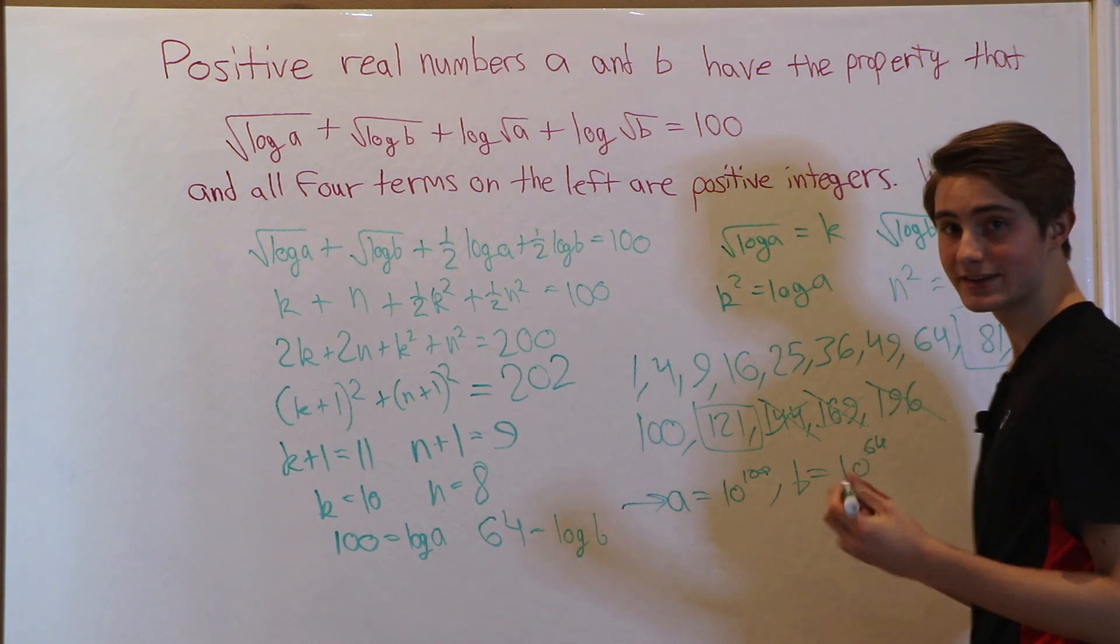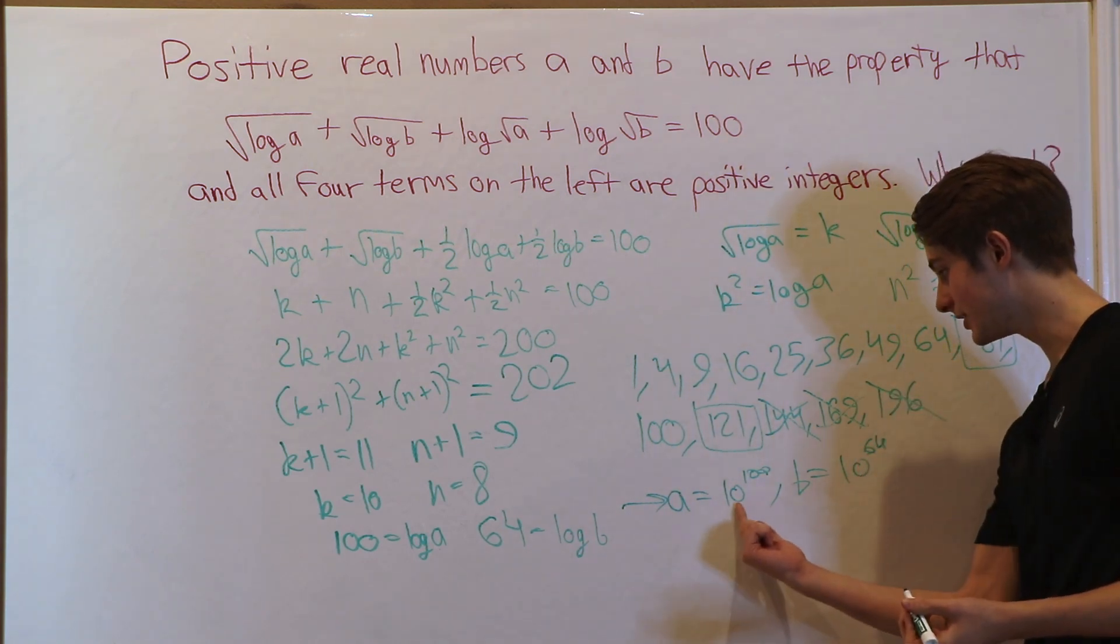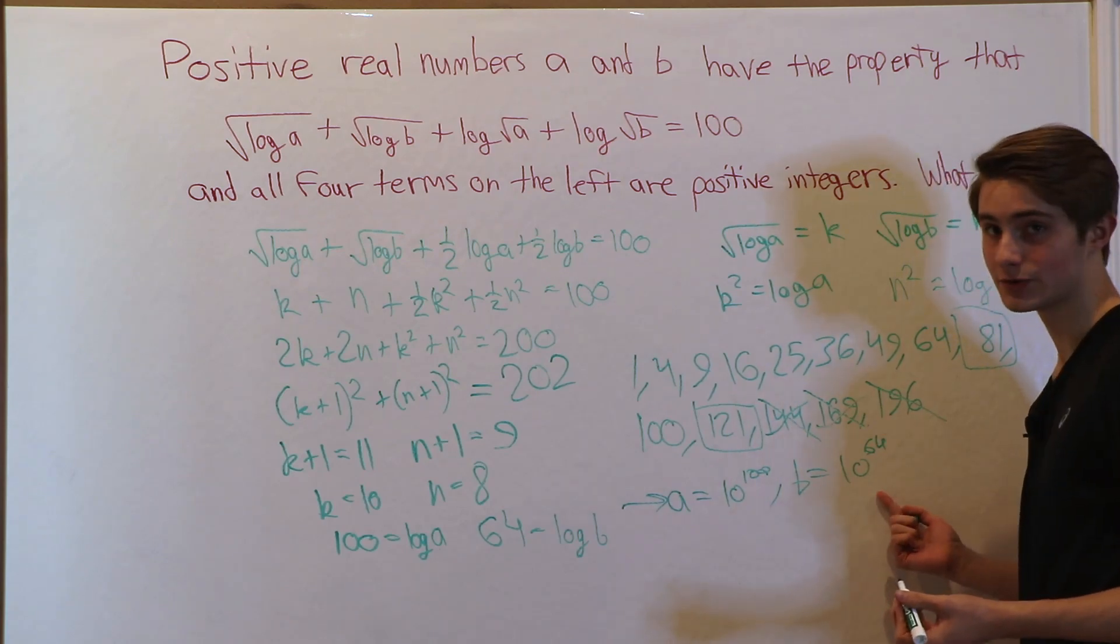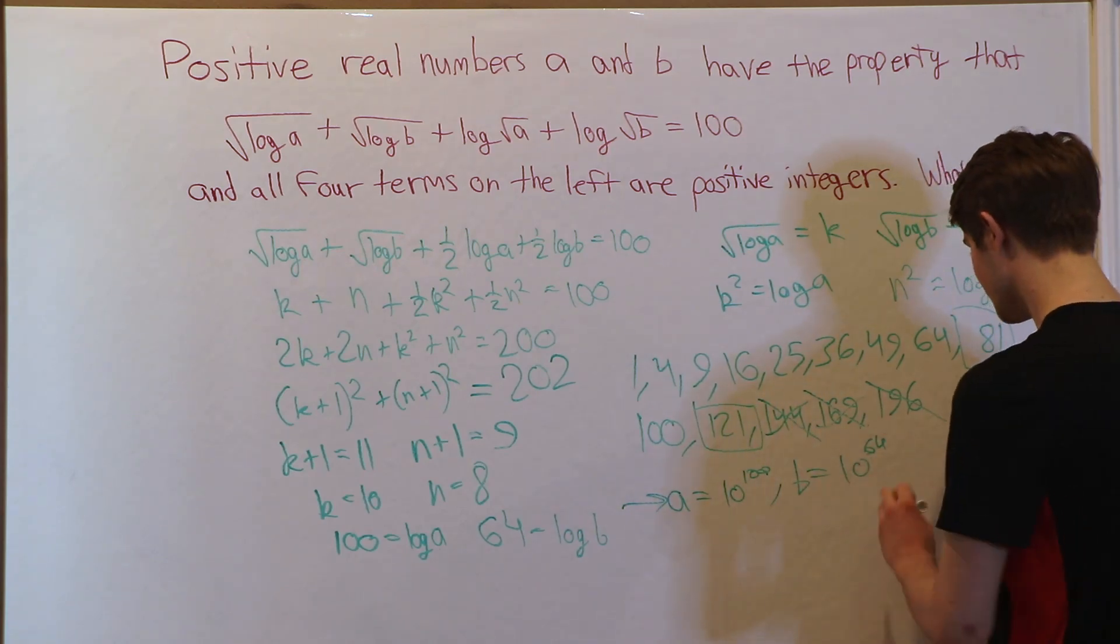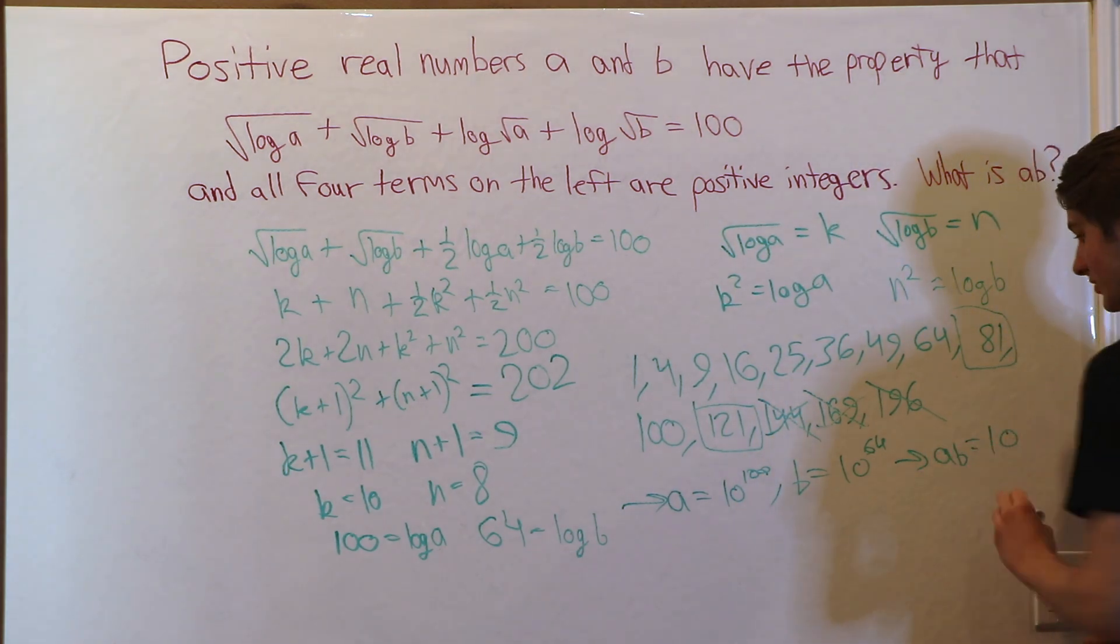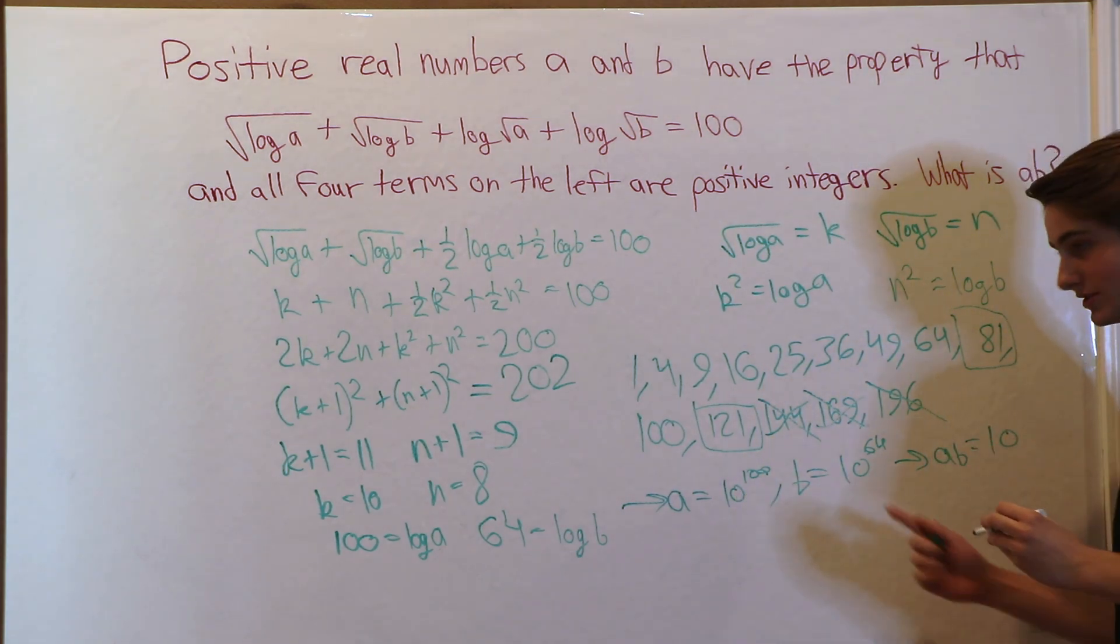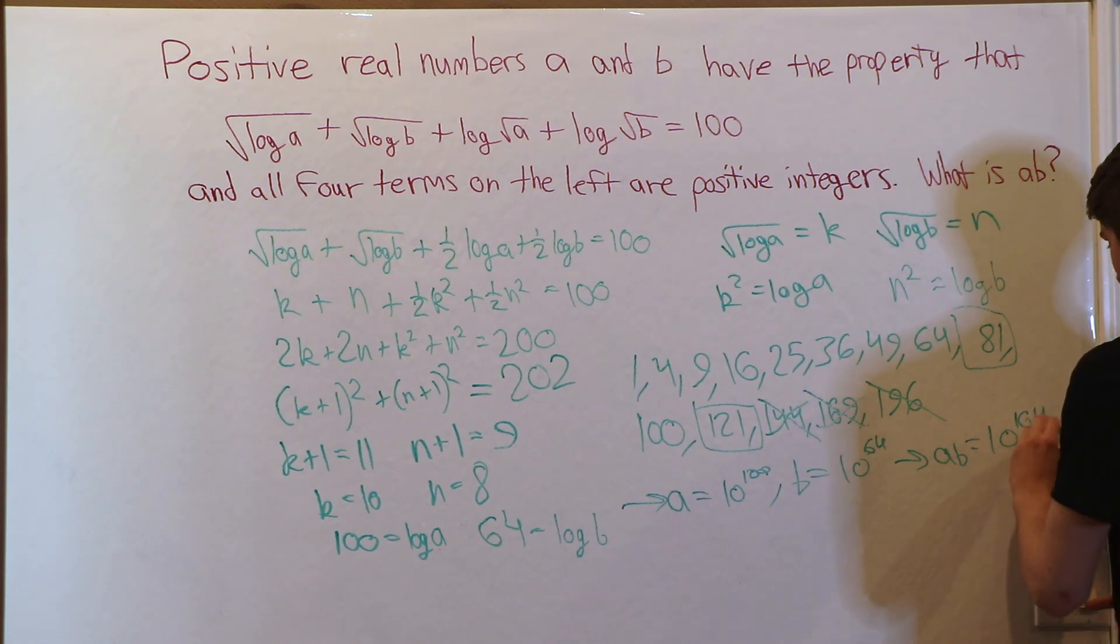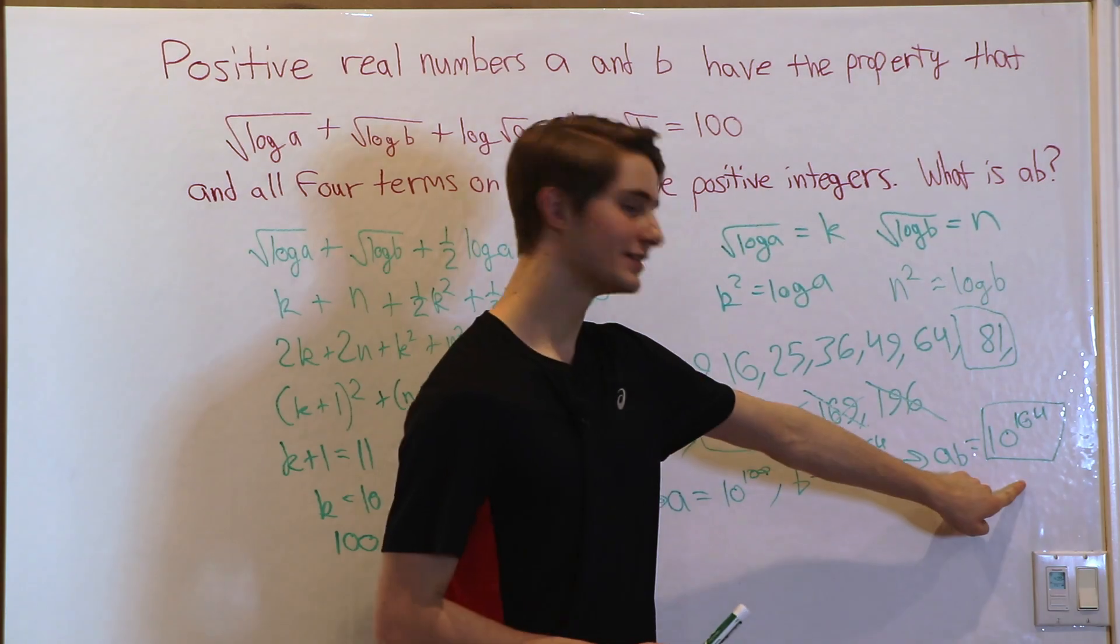If we do A times B, 10 to the 100 times 10 to the 64, we can add the powers, which means AB equals 10 to the 100 plus 64, 10 to the 164, and that is our answer.